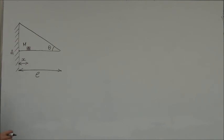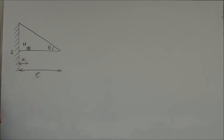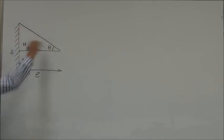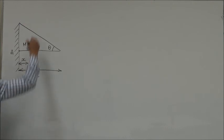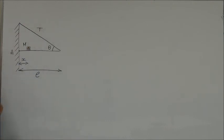The question is: in part A, what is the maximum distance X that we can place the block so that the cable doesn't break, if the maximum tension the cable can withstand is T? If the tension exceeds T, the cable breaks. What is the maximum value of X we can have for the block?